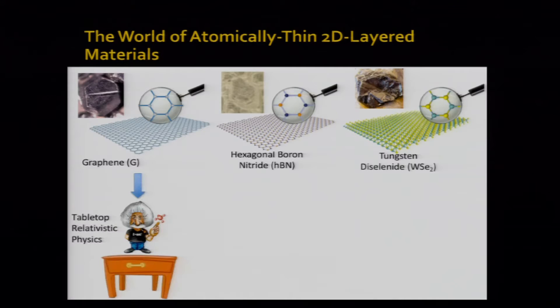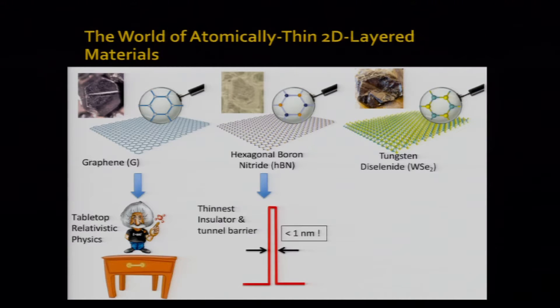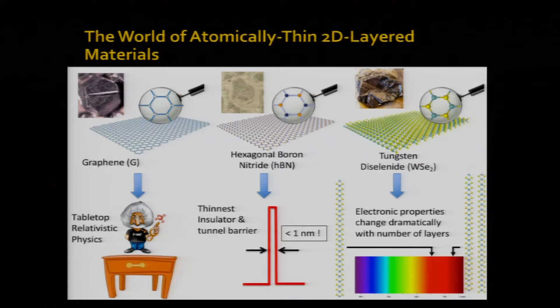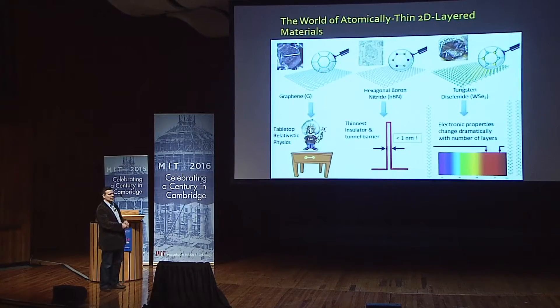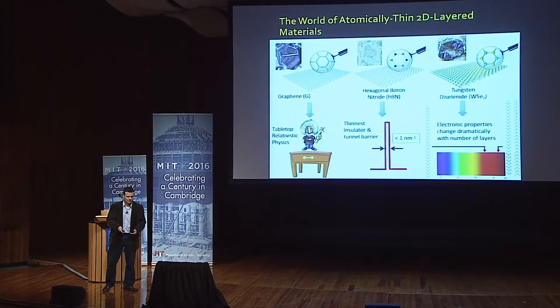Each of these materials has very unique properties, very different from their 3D counterparts. For example, in graphene you can do tabletop relativistic physics. Hexagonal boron nitride is the thinnest insulator or tunnel barrier you can imagine — less than one nanometer. And these semiconductors' electronic properties change dramatically when you change the number of layers: one layer emits in the visible, two layers emits in the infrared, and so on.